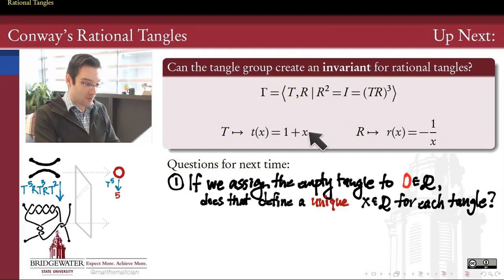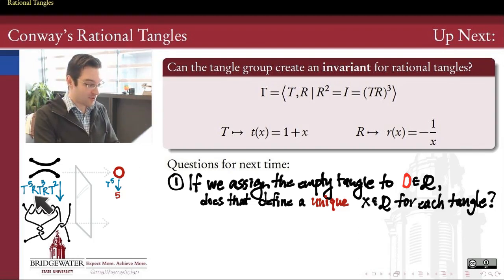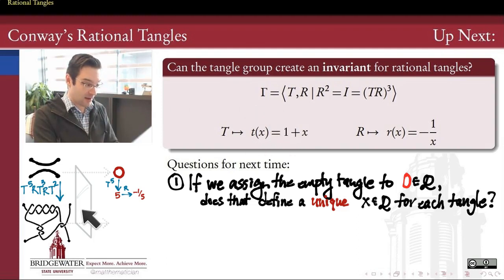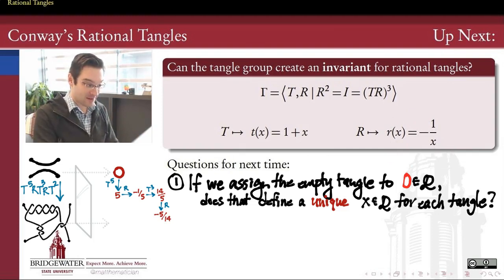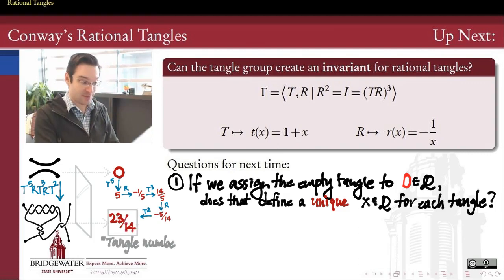Assigning 0 to the empty tangle, we compute an example: a tangle built by five twists, a rotation, three twists, another rotation, and two twists. Starting from 0, applying t five times gives 5. Rotating (opposite reciprocal) gives −1/5. Adding 3 gives 14/5. Rotating again gives −5/14. Adding 2 gives 23/14. So the rational number 23/14 represents this tangle.